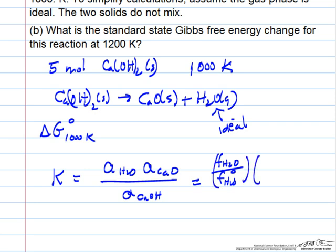And the activity of calcium oxide is the fugacity of calcium oxide at the system pressure, total pressure here at 10 bar, over fugacity of calcium oxide at standard condition, 1 bar. And then a similar expression for calcium hydroxide.